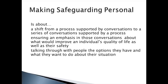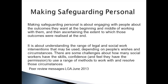There is an ethos of making safeguarding personal. This is about a shift from a process supported by conversations to a series of conversations supported by a process. It aims to ensure there's an emphasis on what would improve an individual's quality of life as well as their safety, and to talk through with people the options they have. Making safeguarding personal is about engaging with people about the outcomes they want at the beginning and middle of working with them, and ascertaining the extent to which those outcomes were realised at the end.